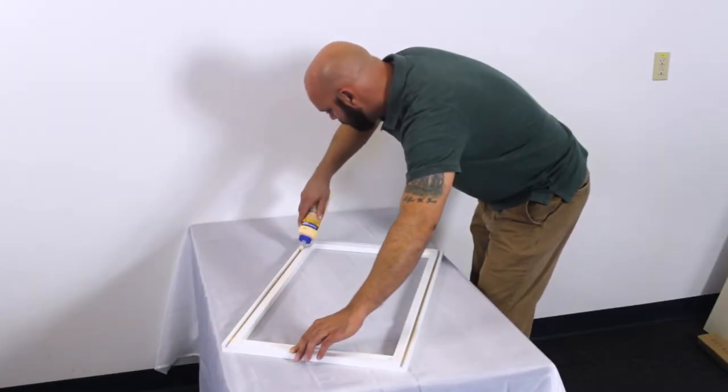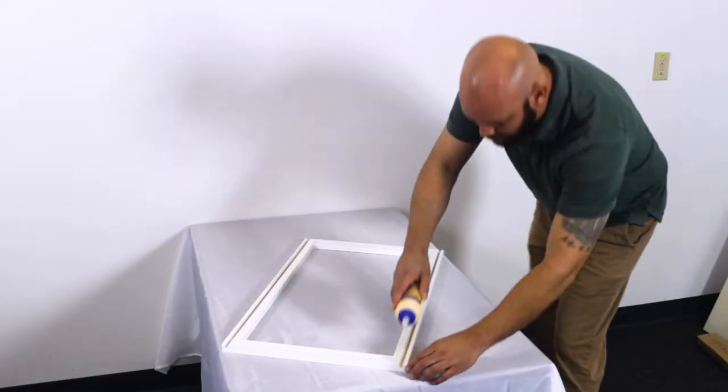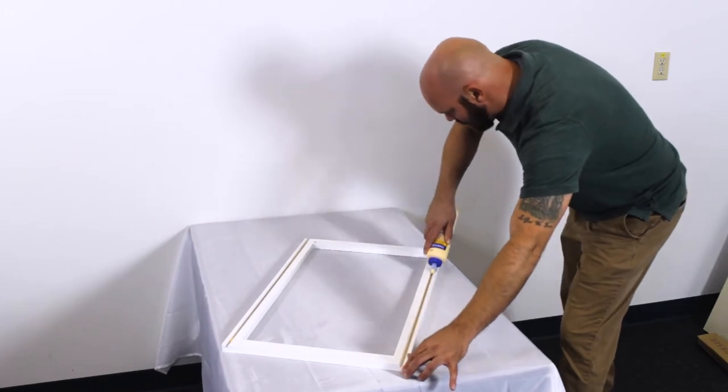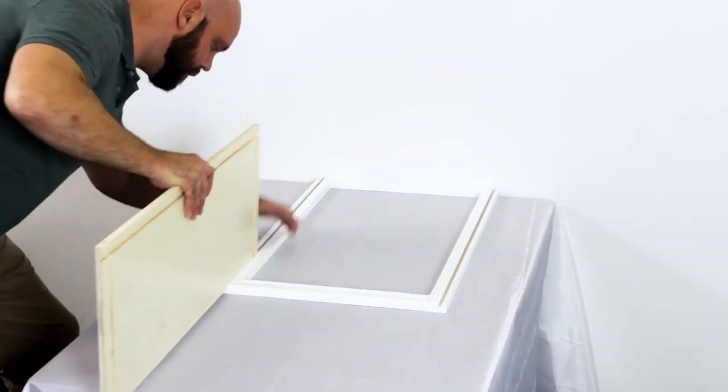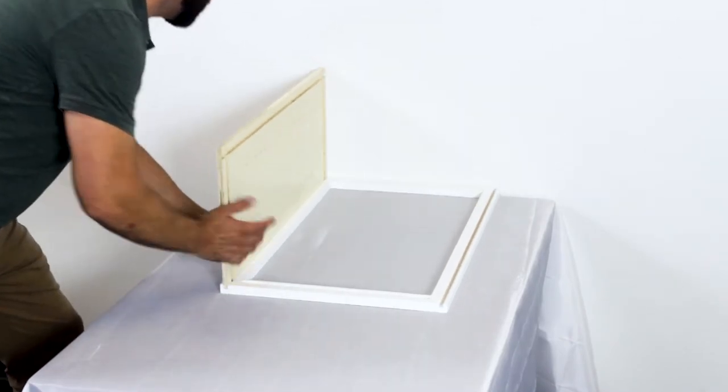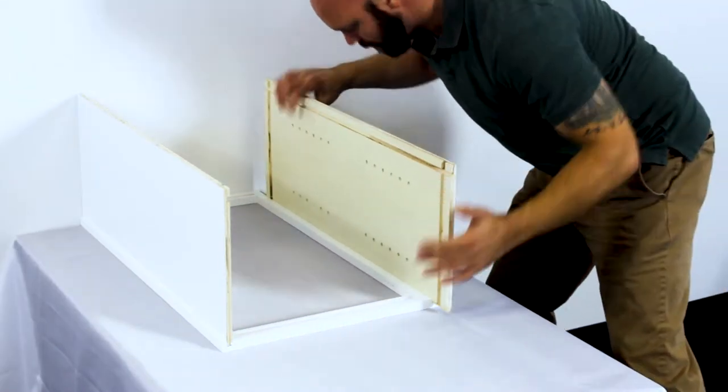Start out by laying your face frame face down on your cloth and apply wood glue to all the dovetail grooves. Now grab your side panels and slide them into place using the dovetail. Make sure the top of the panel is even with the top of the face frame.